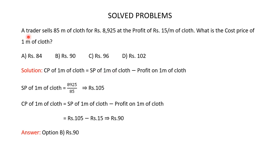A trader sells 85 meters of cloth for Rs 8,925, so the selling price of 1 meter is Rs 8,925 divided by 85, which is Rs 105. Substituting into the formula, the cost price of 1 meter equals Rs 105 minus Rs 15, which is Rs 90. So the correct answer is option B, Rs 90.